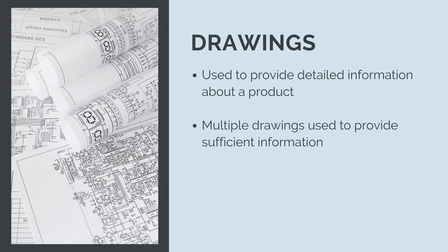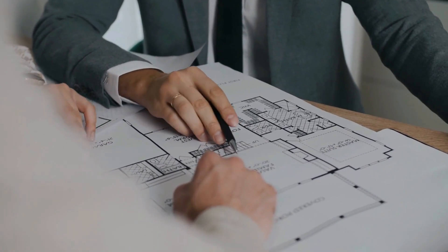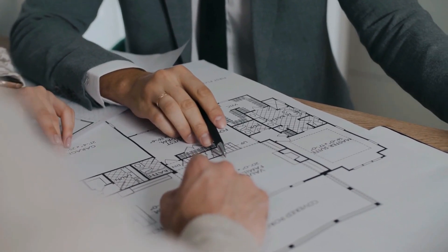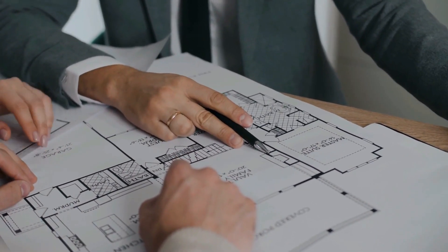Drawings show lots of different information. They show different layouts, geometry, how things connect together, and different detailed sections. Overall, the drawing should show us, as construction managers, exactly what we need to be building. And not all drawings are the same.